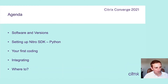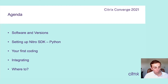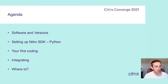On our agenda for today, first I'm going to show you the software and the versions I'm using just to give you a point of reference — you don't need to mirror the setup at all. Then we'll be setting up the actual Nitro SDK for Python, and when that's done we'll do some actual coding together. I'll show you some examples. I'll also show you some things I've made in the past so you'll get an idea of what's possible.